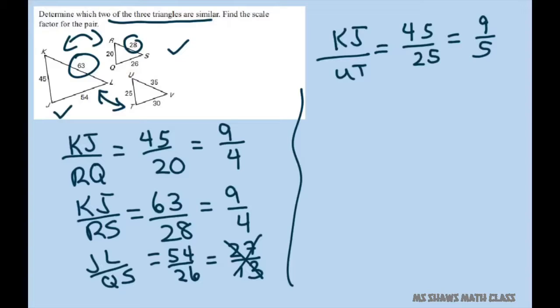Now let's try KL and UV. And that's 63 over 35. Let's divide both of those by 7. So 63 divided by 7 is 9. And 35 divided by 7 is 5. So, so far, so good.